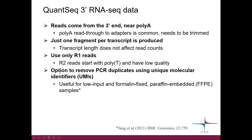Importantly, we have the option to remove PCR duplicates using unique molecular identifiers, or UMIs. This is particularly useful for low input data or formalin-fixed paraffin-embedded samples where RNA tends to be fragmented.